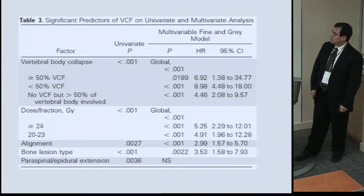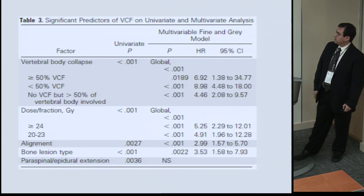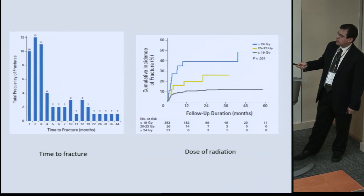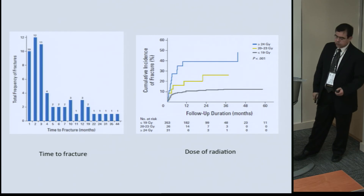A table shows that vertebral body collapse, dose of radiation, and alignment were independent predictors. Importantly, most fractures occurred in the first three to four months after treatment, and a dose of 24 Gray in a single fraction was an independent risk factor for developing those fractures.